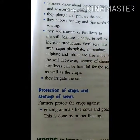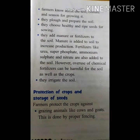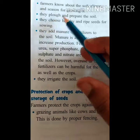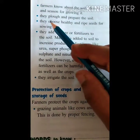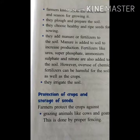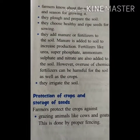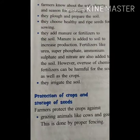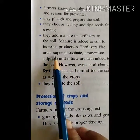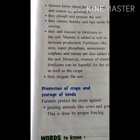Farmers prepare the soil by ploughing with machines or with the help of oxen and buffalo. They choose healthy and ripe seeds for sowing, because seeds that are not nutritious cannot grow into healthy new plants. Manure is added to the soil to increase production.